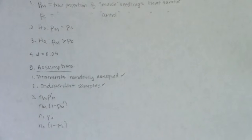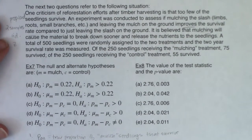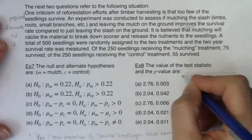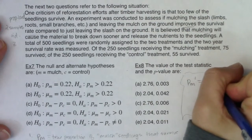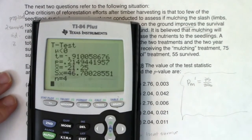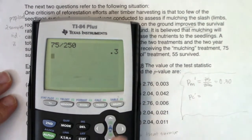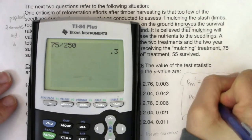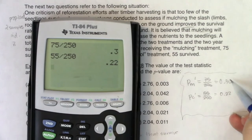Now's a good time to figure out what our sample proportions are and get some gut feelings about whether the mulch group is doing better. The mulch group had 75 out of 250, which gives about a 30% success rate. The control group had 55 out of 250, which gives about 22%. So they're off by about 8%. That's a pretty good gap, but I'd need to know the standard deviation to determine if 8% is a really big deviation.